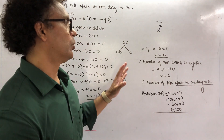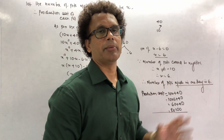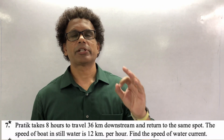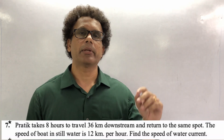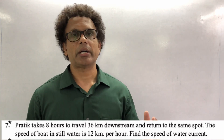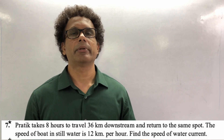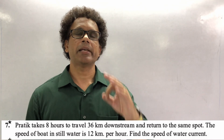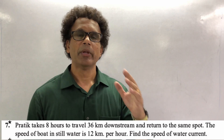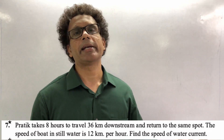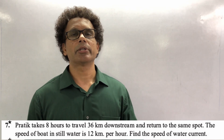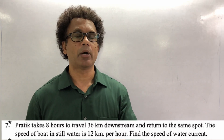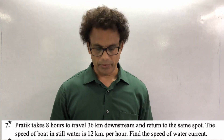That is how you do sum number 6. Now check sum number 7 - it is a very important sum. Sum number 7 and 8 are both very important. Sum number 7 is the upstream and downstream problem. This same type was in your first chapter as a solved example, but now it appears in Exercise 2.6.